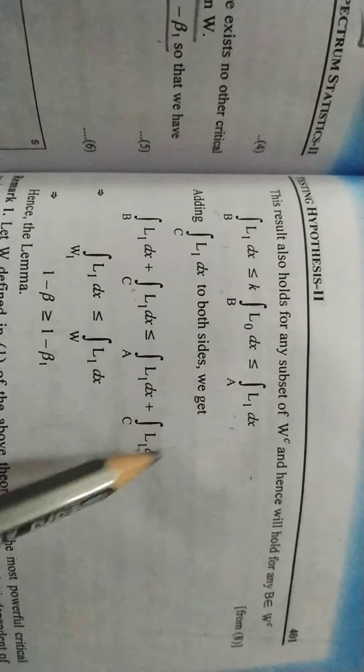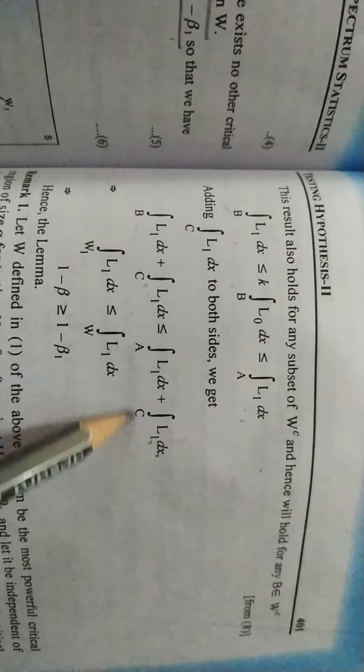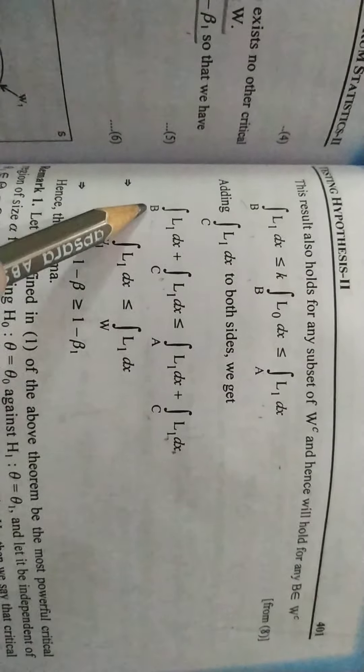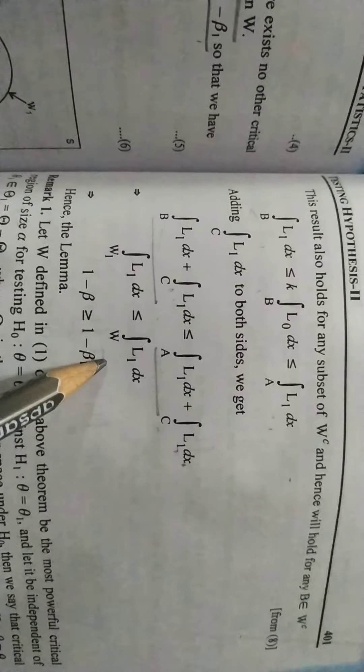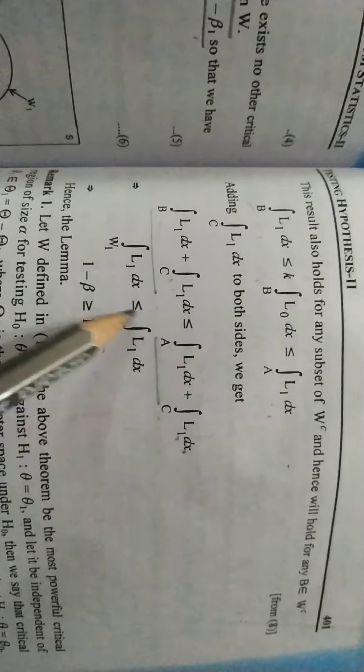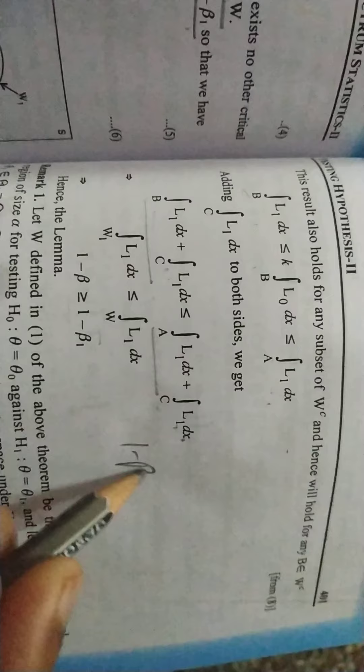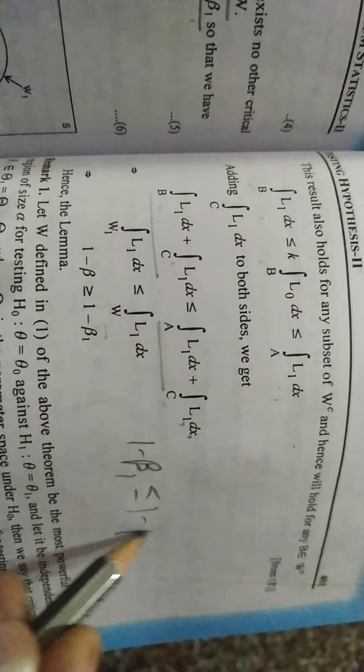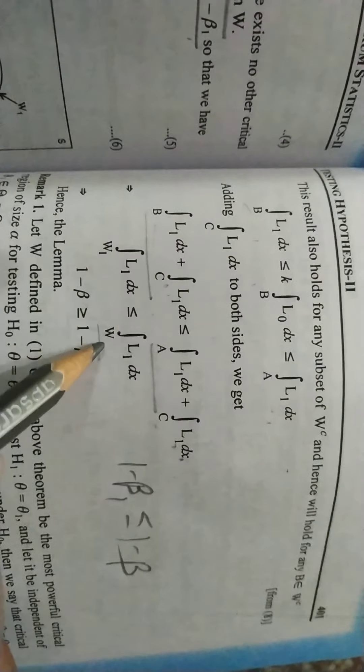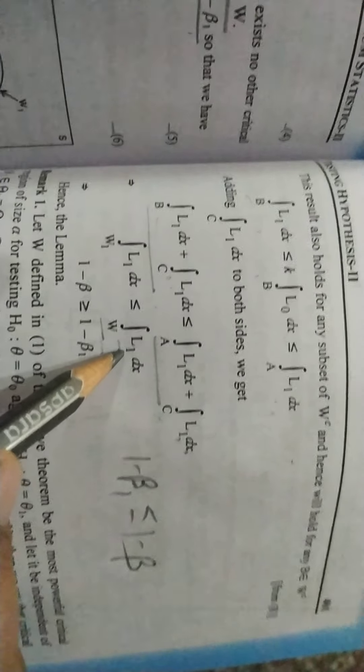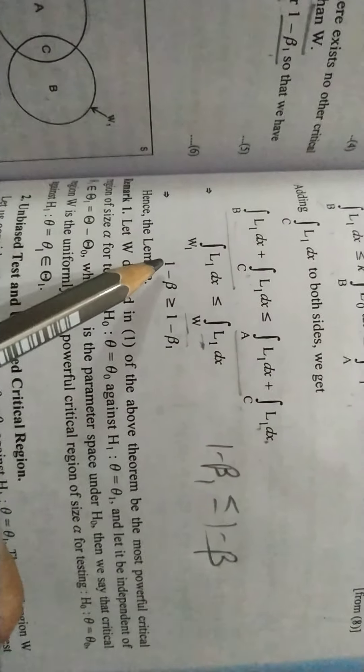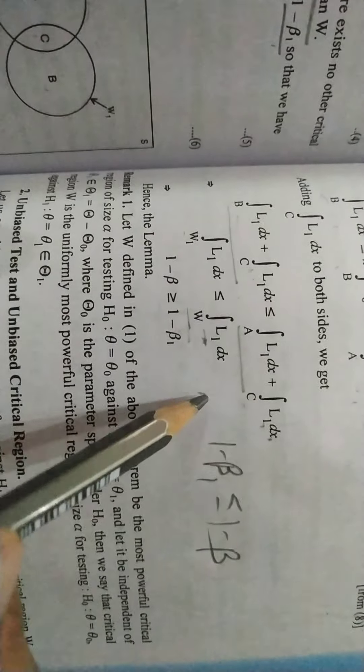Look at both sides. Now, this and this side, you add this thing. LC1, LC1. So this is B union C, this is A union C. What is this W1? B union C. What is this W? A union C. So this is what you have. So this is 1 minus beta1, this is less than equal to 1 minus beta. Because this region is W. What is L1? What is power? Because it is defined here. And in W1, it is 1 minus beta1.